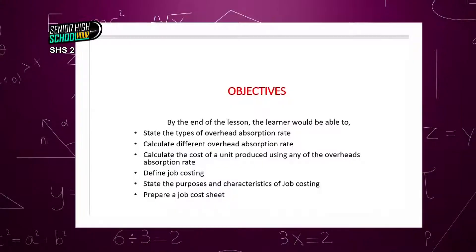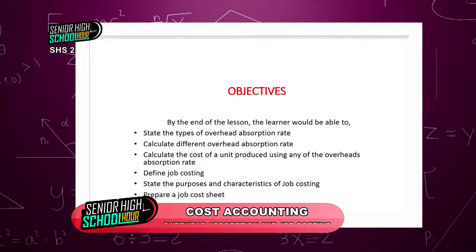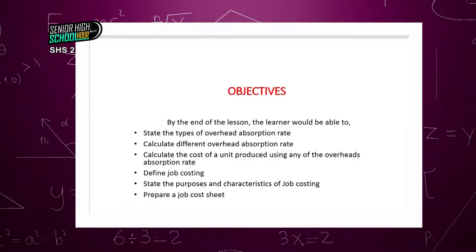By the end of the lesson, you'll be able to state the types of overhead absorption rates — which we've already done, so it should be easy for you. You'll also calculate different overhead absorption rates, calculate the cost of a unit produced using any of the overhead absorption rates, define job costing, state the purposes and characteristics of job costing, and prepare a job cost sheet.